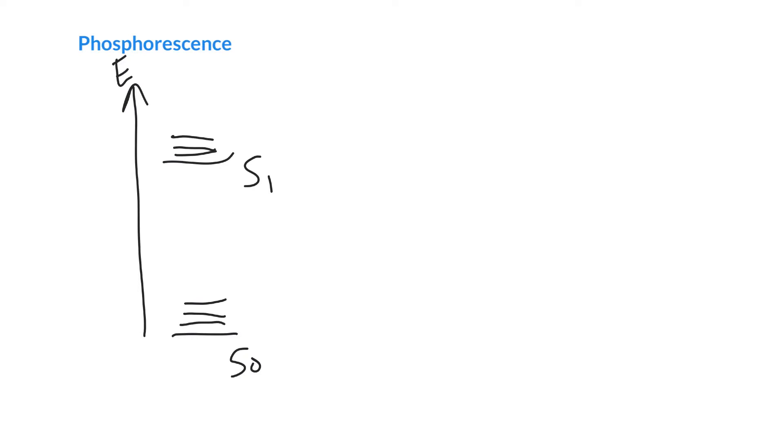So 0, 1, 2, 3, 4 for S0, and 0, 1, 2, 3, 4 for S1. That looks pretty good. And we shine light on the molecule and light causes an absorption from S0 to S1.